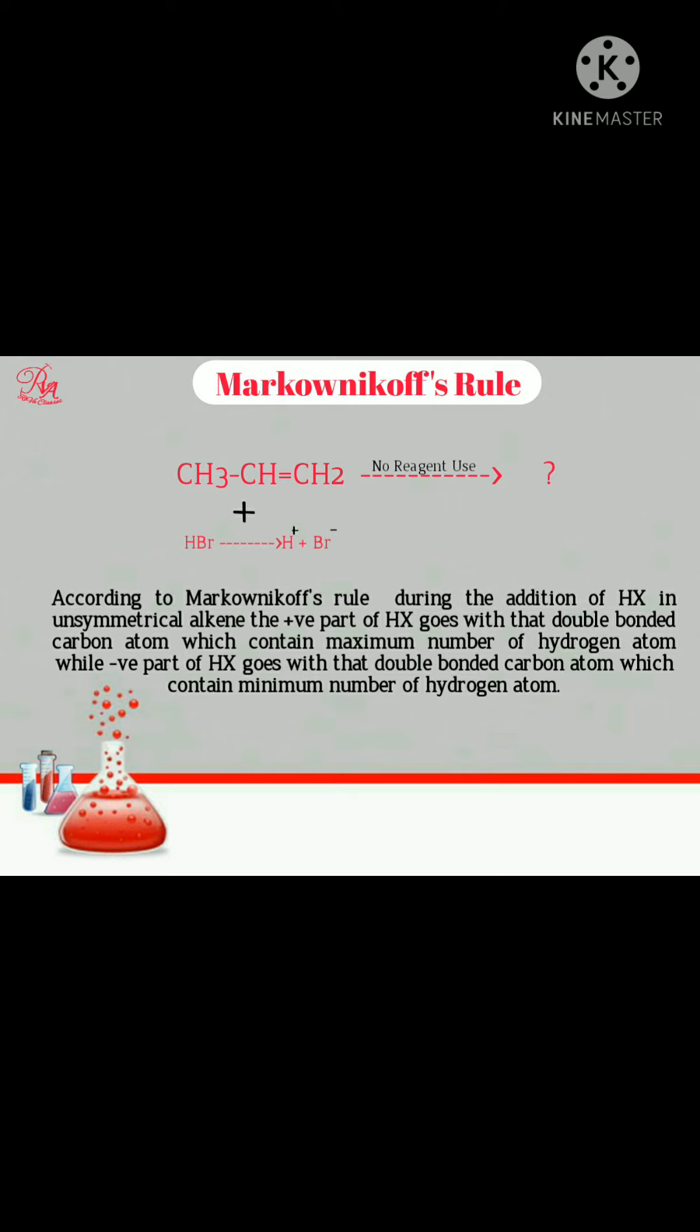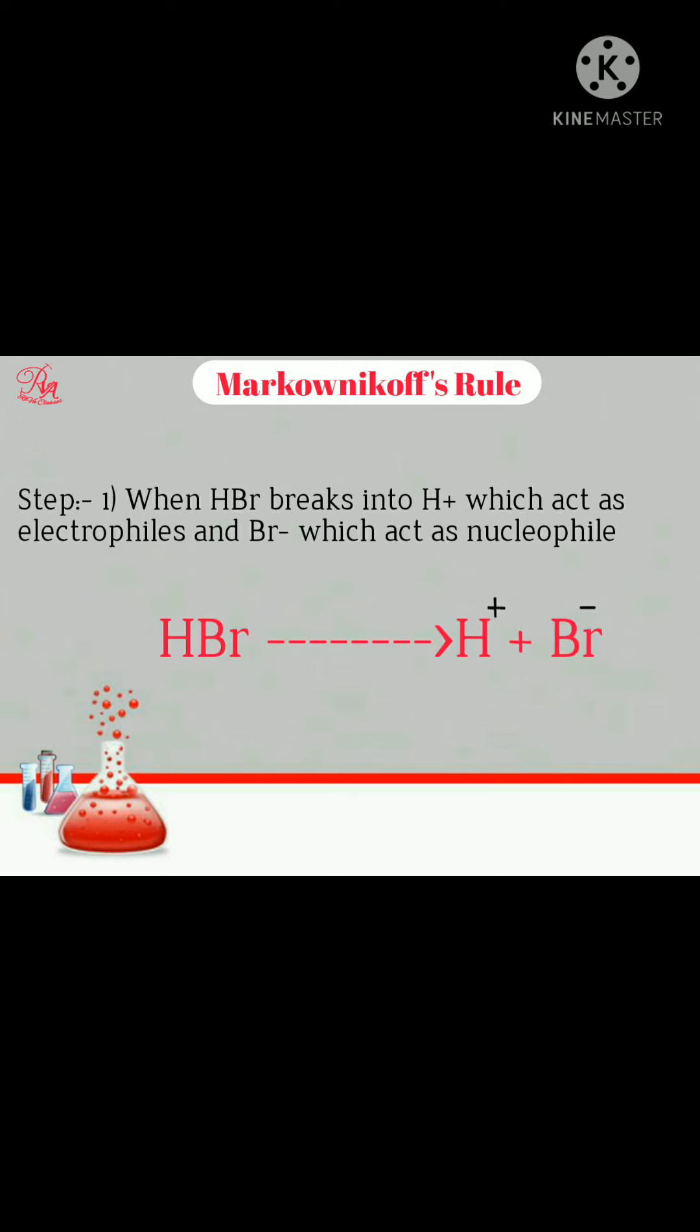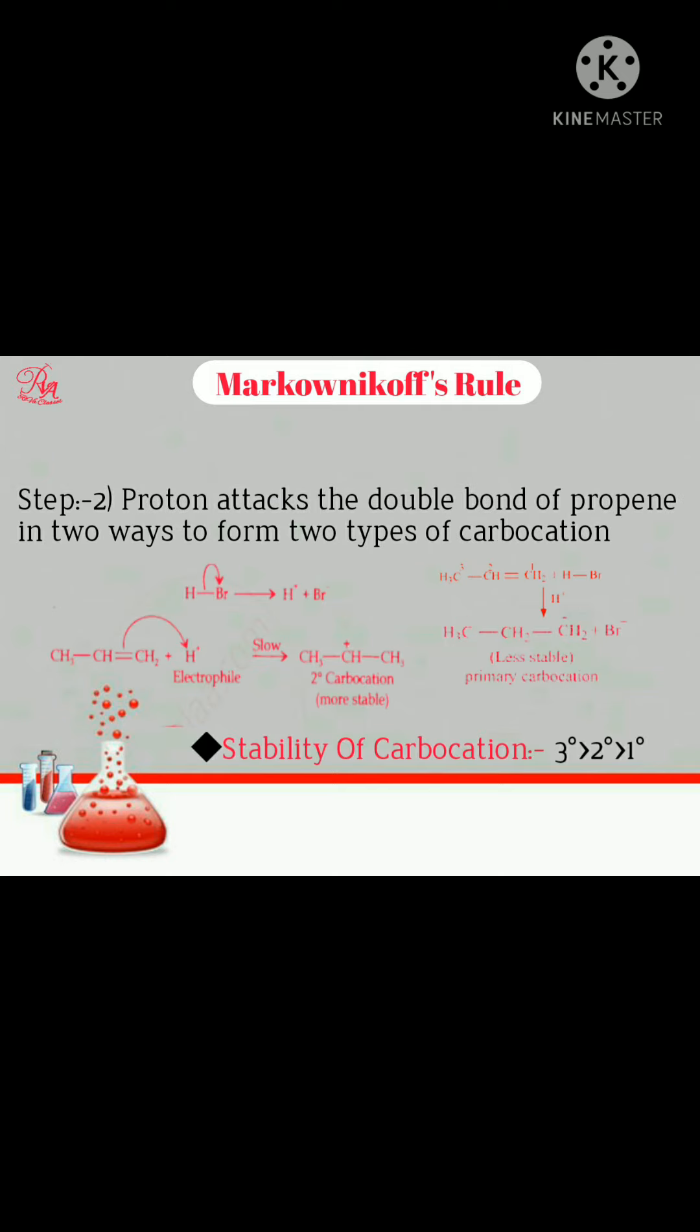Let's see the example step by step. Step one: When the HBr molecule breaks into H positive, which acts as electrophile, and Br negative, which acts as nucleophile. Step two: The proton attacks the double bond of propene in two ways to form two types of carbocations - a secondary carbocation and a primary carbocation.